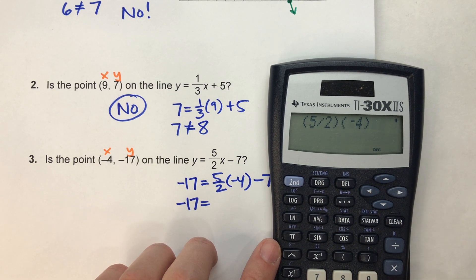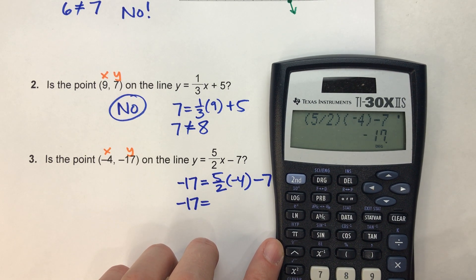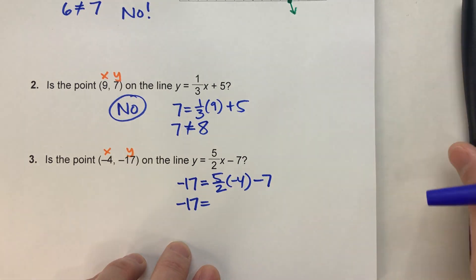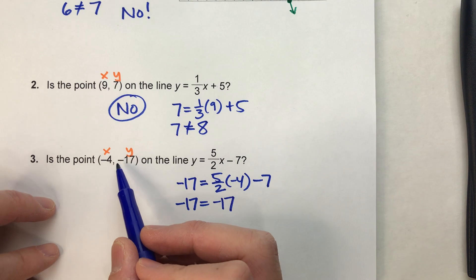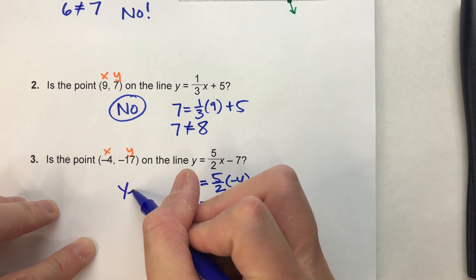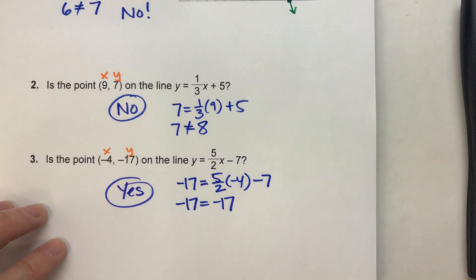I get -17. And look, that's exactly what we wanted it to be. So, that tells us that coordinate, yes, it is on the line.